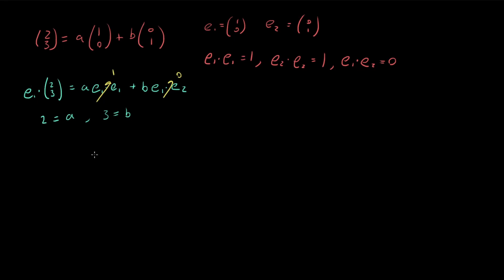That was an easy case where we didn't really need this extra step. But let's consider a slightly more complicated case. Say we want to write vector (2, 3) in terms of some new basis vectors — instead of (1, 0) and (0, 1), maybe we want to express it in terms of E1 = (1, -1) and E2 = (1, 1).